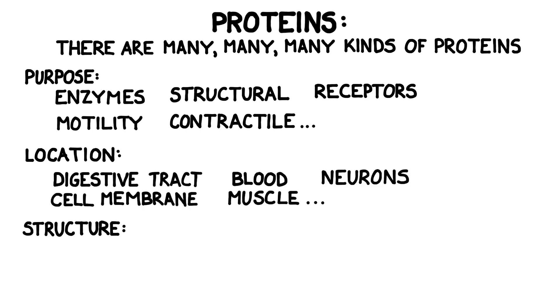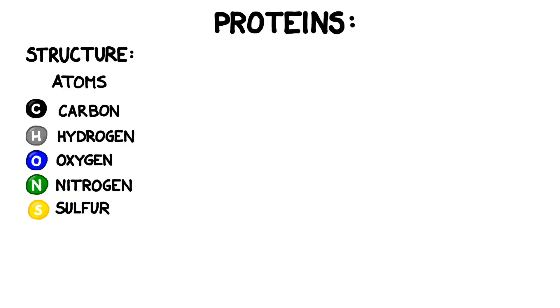These are found in many different locations including the digestive tract, the blood, neurons, cell membranes, and muscle tissue, but there are obviously a lot more examples than that. Proteins contain carbon, hydrogen, oxygen, nitrogen, and sometimes sulfur as well.